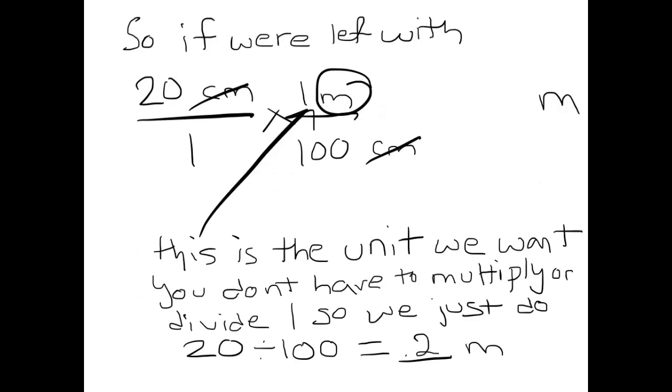So if we're left with 20 centimeters over one times one meter over 100, and the meter is the unit that we want, so you don't have to multiply or divide the one. We just do 20 divided by 100 because 100 is on the bottom, which equals 0.2 meters.